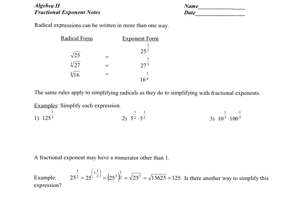Just to remind you of a couple of properties, Ms. Cardillo showed you how to take an expression in radical form and change it over to exponential form. Don't forget that a square root by default is the second root, so the root index is a 2. We take the radicand — the number underneath the radical — that becomes our base in exponential form. Its exponent goes in the numerator and the root index goes in the denominator. So the square root of 25 becomes 25 to the 1/2 power, the third root of 27 becomes 27 to the 1/3 power, and the fourth root of 16 becomes 16 to the 1/4 power.